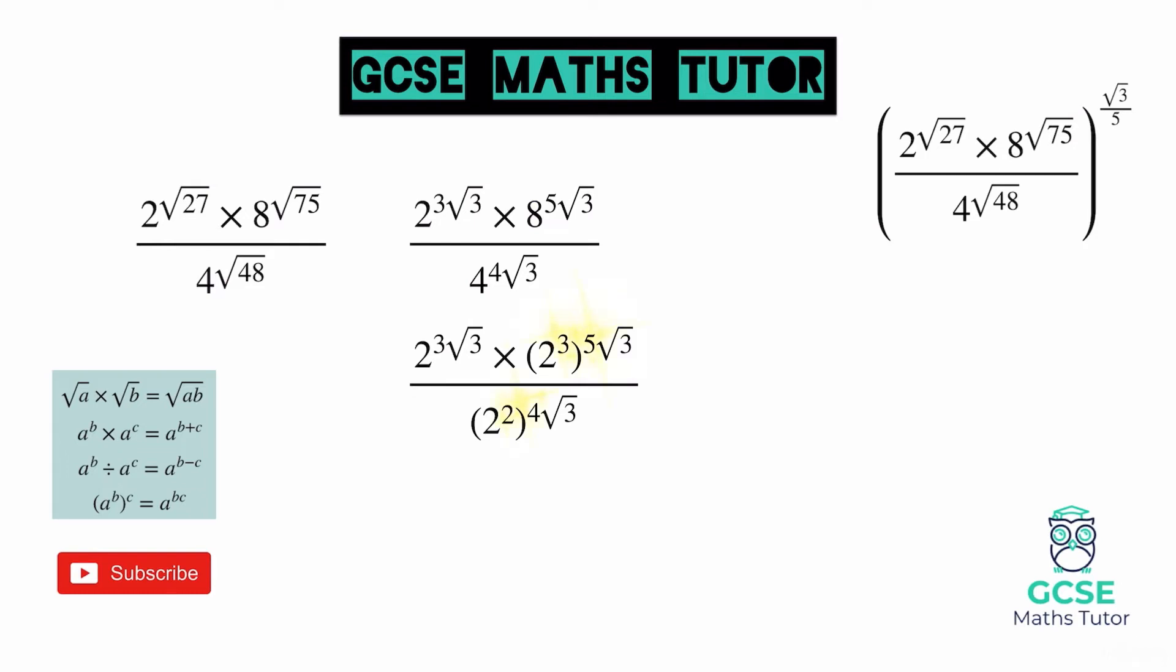So these are the powers that we're going to multiply. So we're going to do 3 times the 5 root 3, and 2 times the 4 root 3, and that would give us this. So we now have 2 to the power of 3 root 3, 2 to the power of 15 root 3, and 2 to the power of 8 root 3. Now the next step is we can actually start to simplify this using some of our laws of indices.